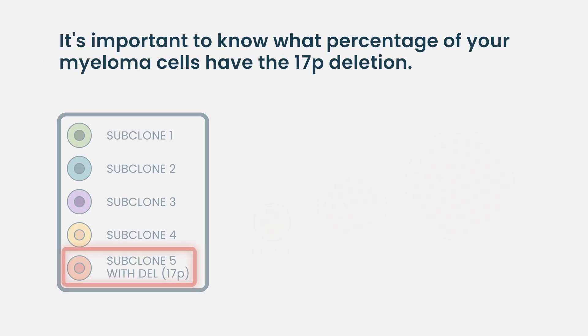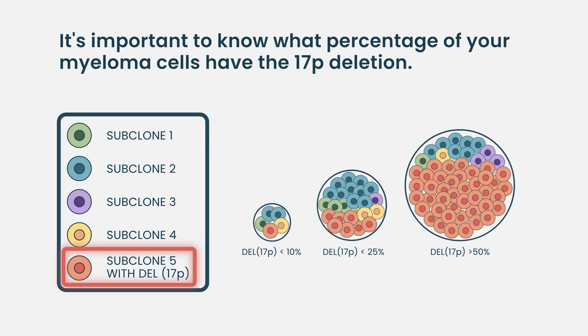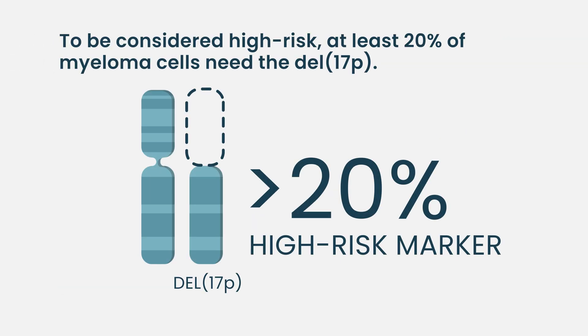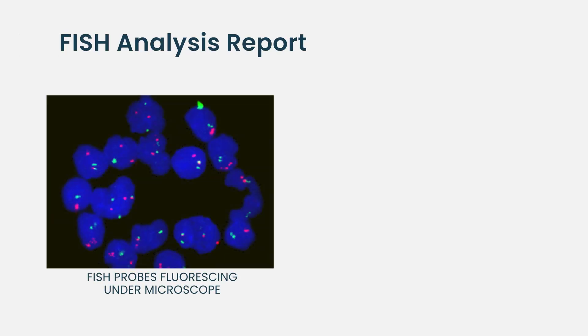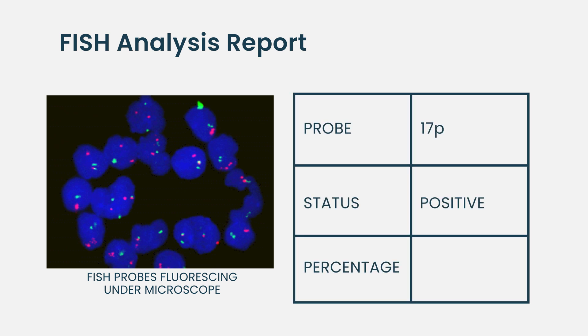For example, with 17P deletion — which we associate with high-risk and very aggressive multiple myeloma — just knowing that you have that mutation doesn't give us the whole picture. It's important to know what percentage of the myeloma cells have this mutation, so we can better assess whether it will impact the patient's survival and response to therapy. FISH results might show 5%, 10%, 40%, 50%, 80%, or none.